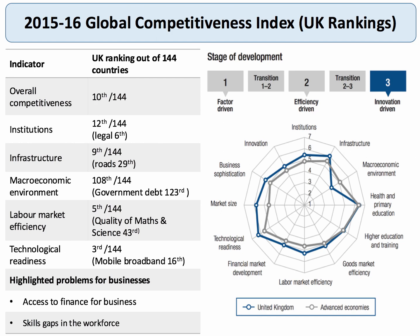The UK is ranked by the World Economic Forum as the 10th most competitive country in the world. Our institutions are well regarded — our legal system is 6th in the world. Our infrastructure is pretty good, but our roads rank only 29th. We have a poor macro environment with very high government debt. The labour market is regarded as 5th best in the world, but the quality of our maths and science is only 43rd — gold dust as evidence in an AS Macro paper. Technological readiness is 3rd in the world, but mobile broadband speed is only 16th. These immediately suggest supply-side areas the UK could focus on: improving maths and science education, increasing investment in mobile broadband capacity, and improving transport infrastructure.